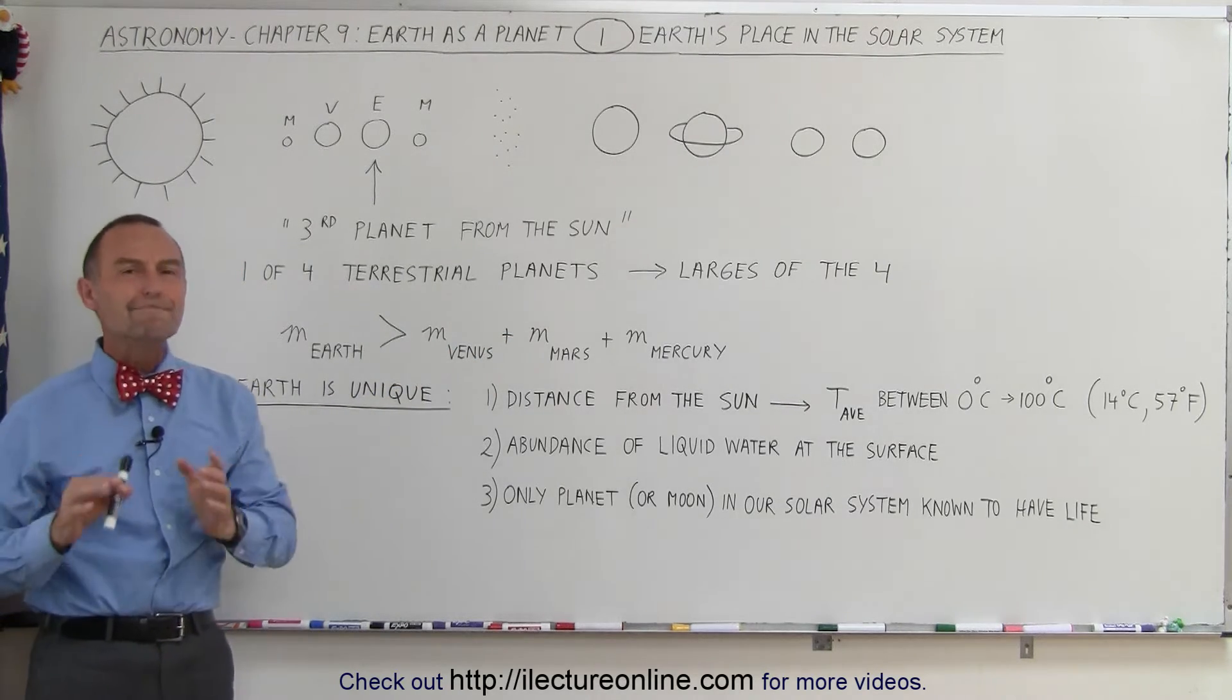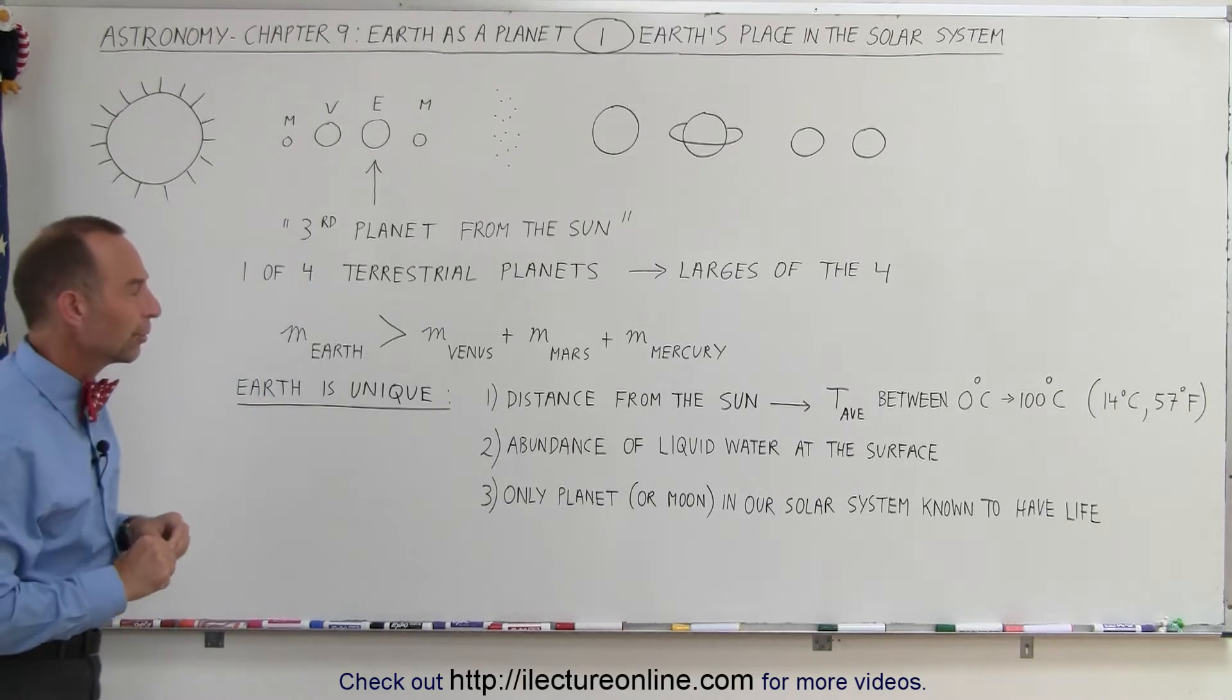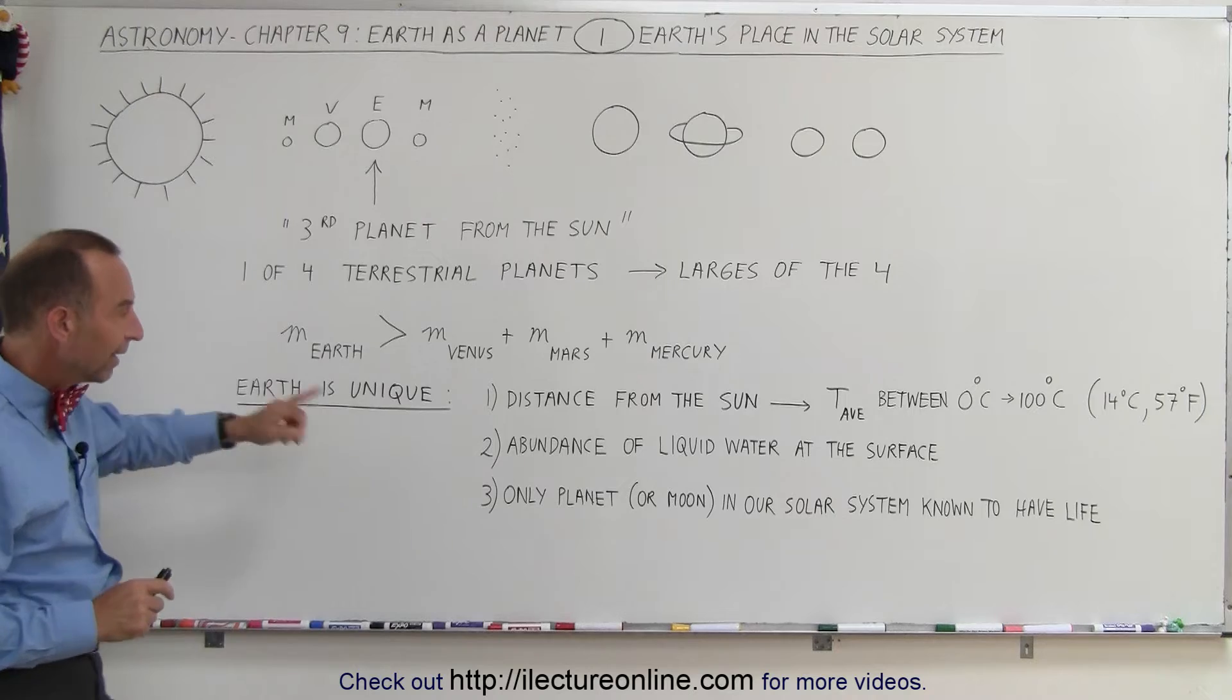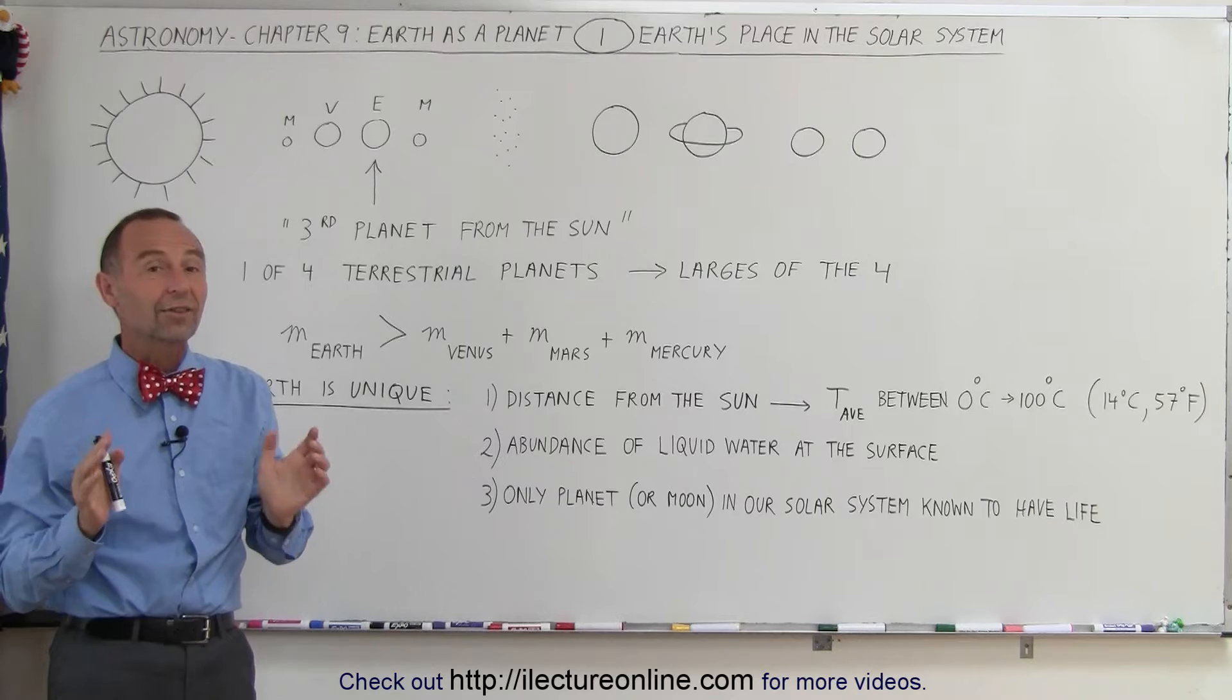Earth is also unique in many ways, but three very important ways. And let's take a look at the three important ways. For one, the distance between the Earth and the Sun is just perfect. Perfect for all kinds of things.